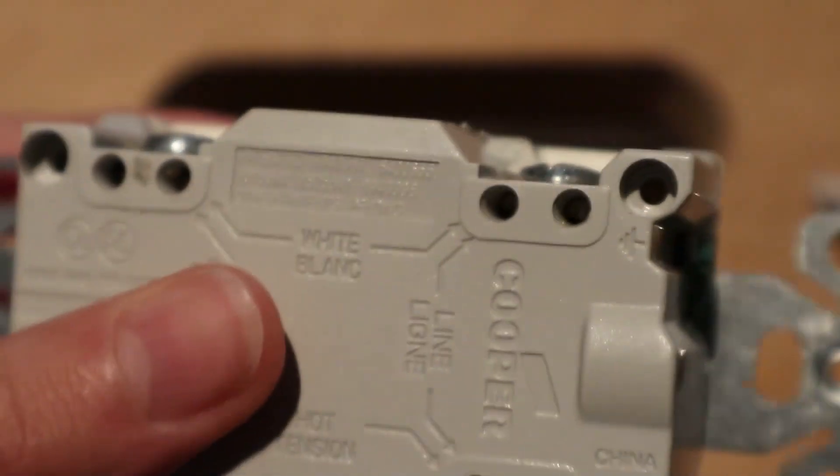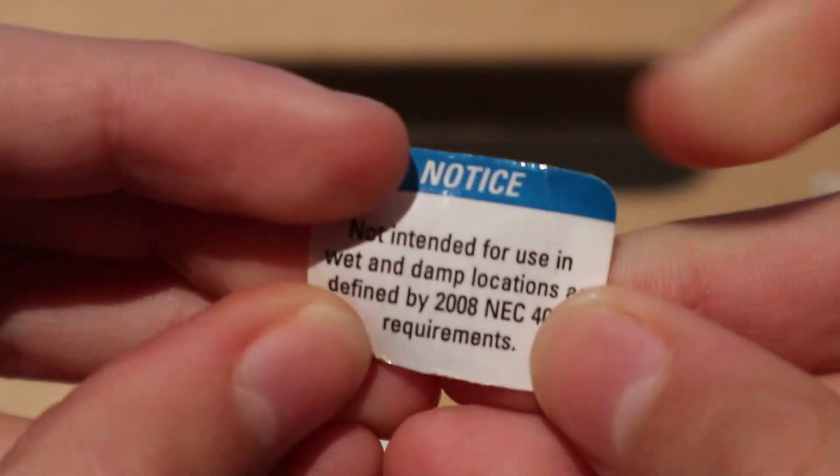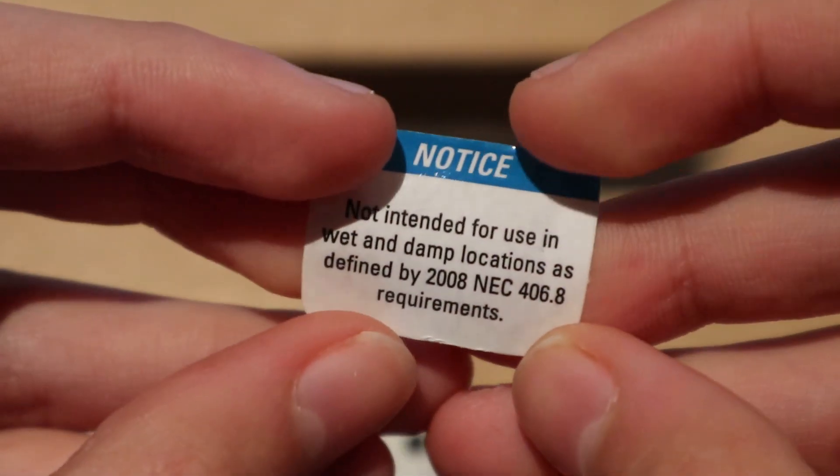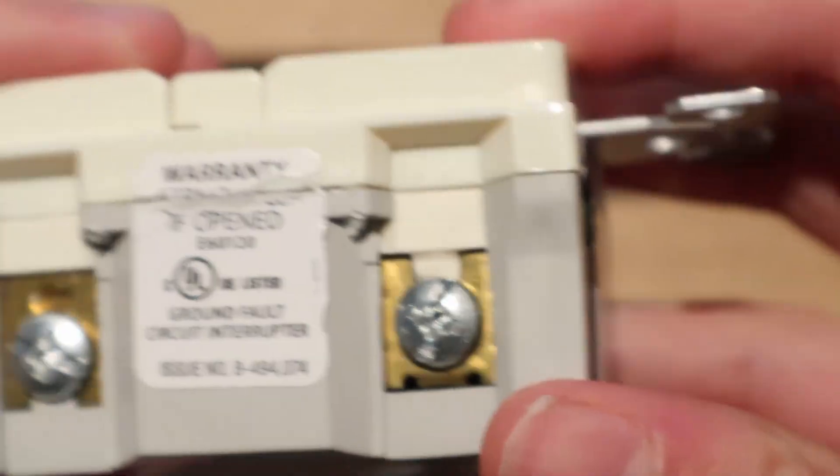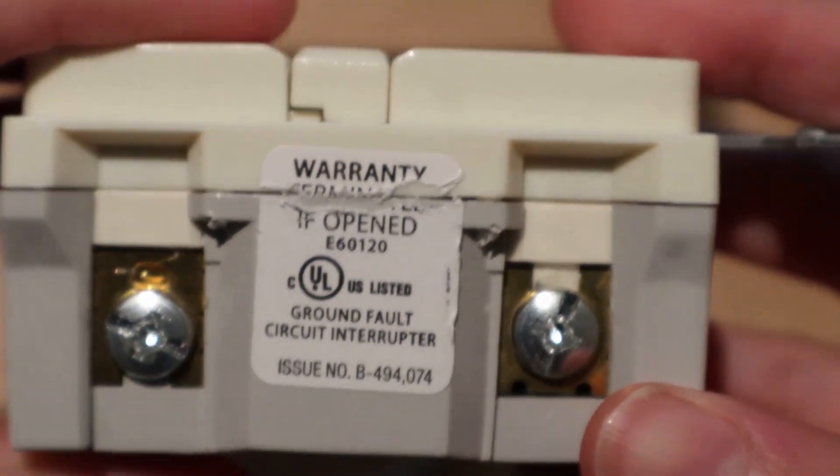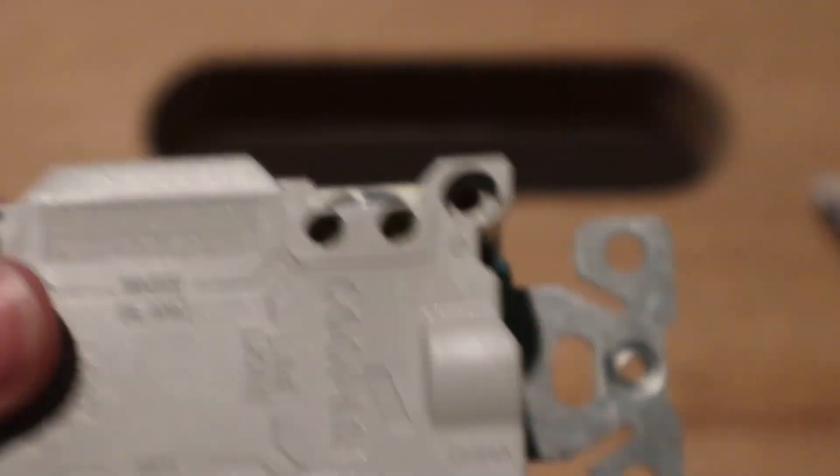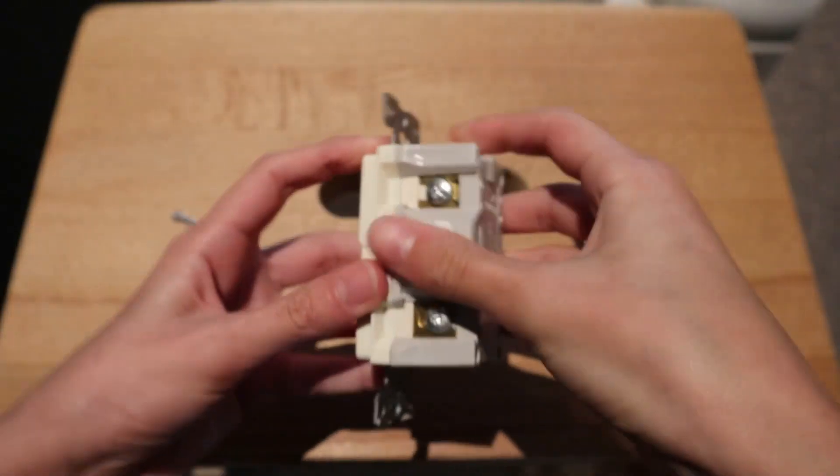There is a sticker that said not for use in wet and damp locations, which I think means don't use this outlet outside. And also there is one of these warranty void if removed stickers. But now let's open this thing up.